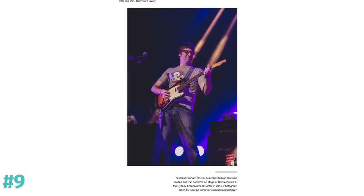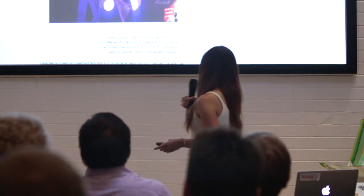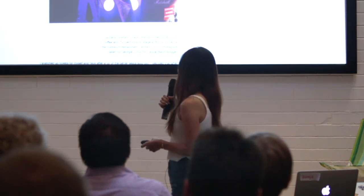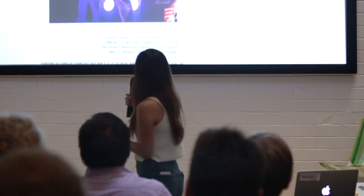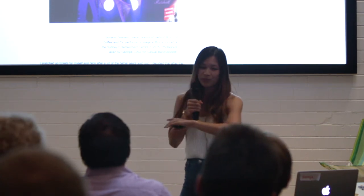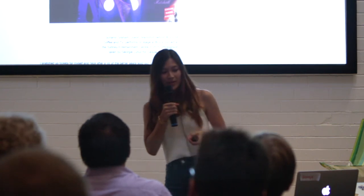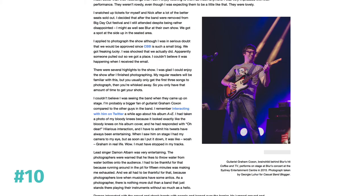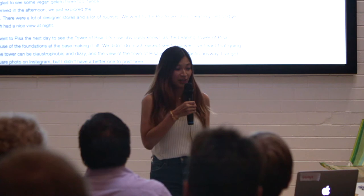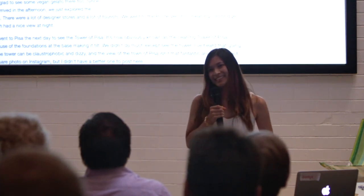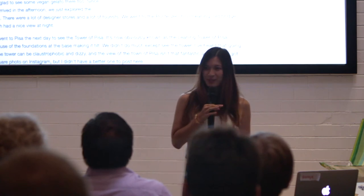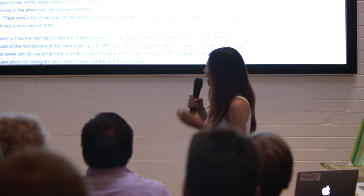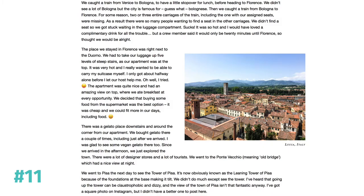I thought it might be interesting to use a different picture — you're probably sick of seeing the same band. This is a photo I took of Graham Coxon from Blur, in Sydney. I wanted to show what it looks like with a portrait image and a line to the right, and I think it would be a lot more interesting if this was floated amongst the text. I'm going to move on to a travel picture — does anyone like travelling? I've tried to put a variety of images here so you're not seeing the same thing.